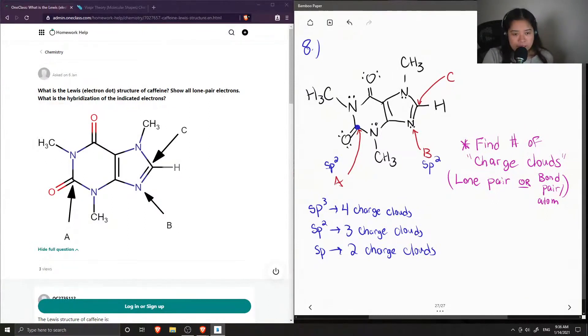And lastly, this carbon contains three bonded atoms to two nitrogens and a hydrogen, so C is also sp2.